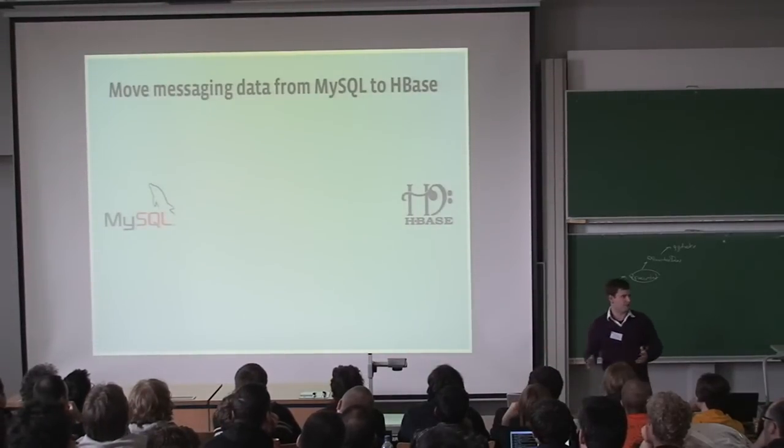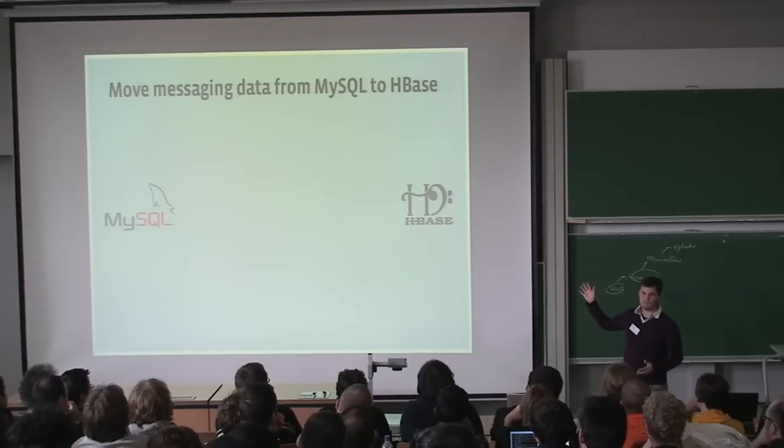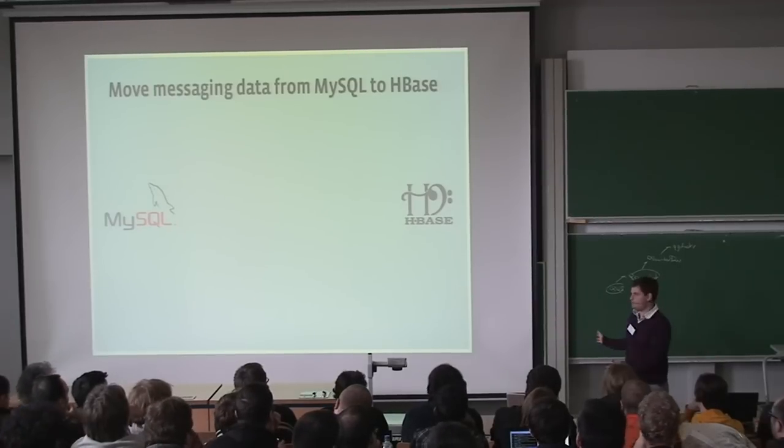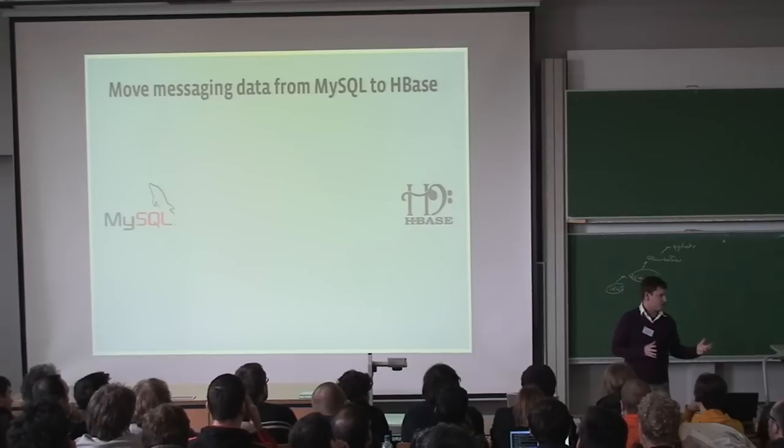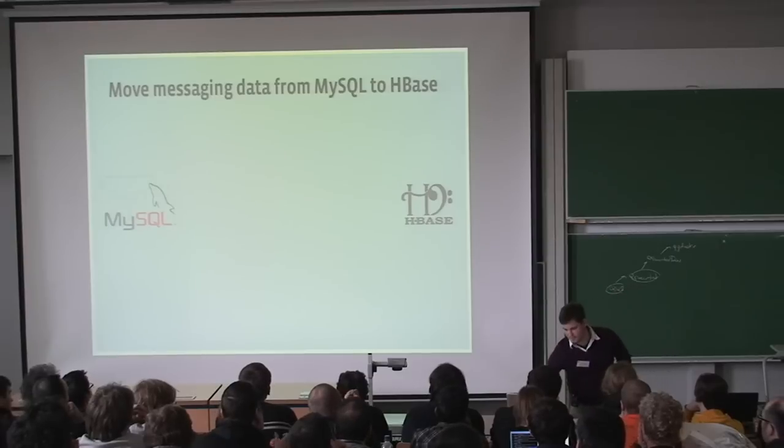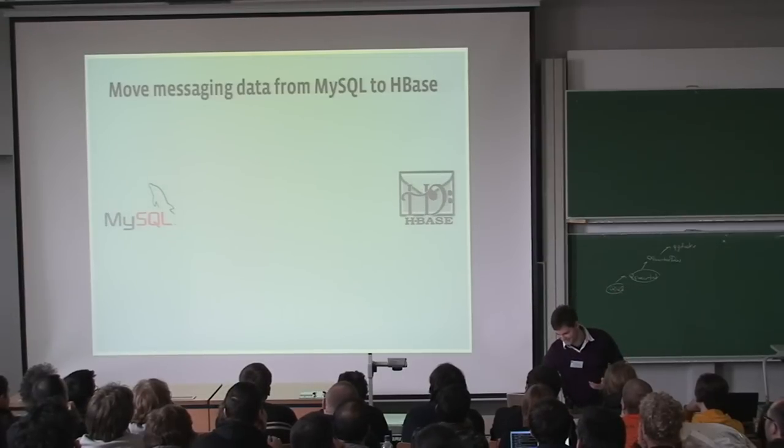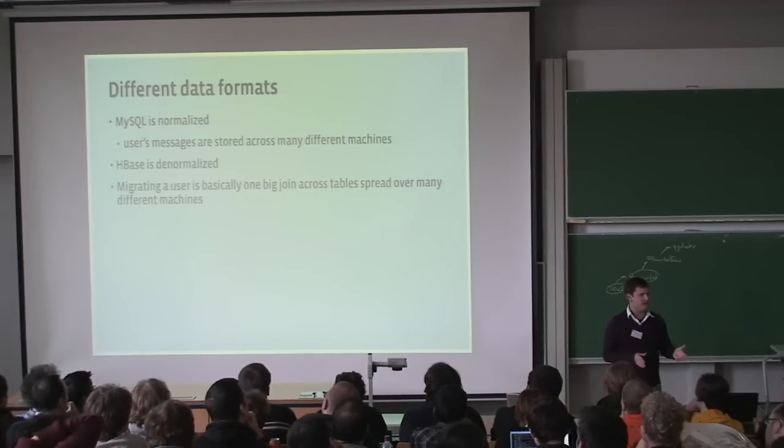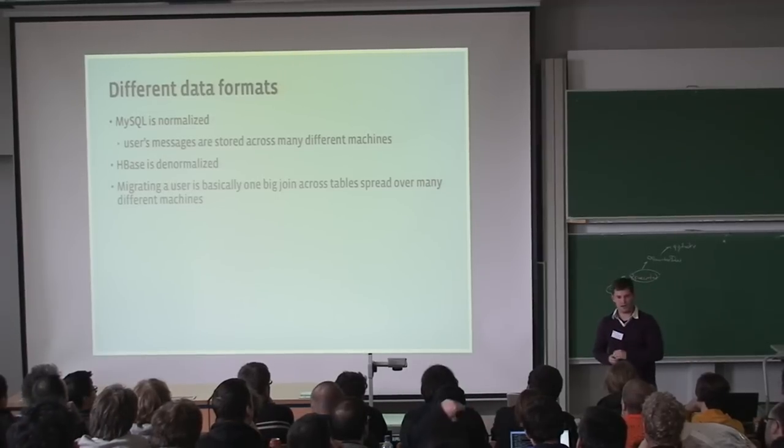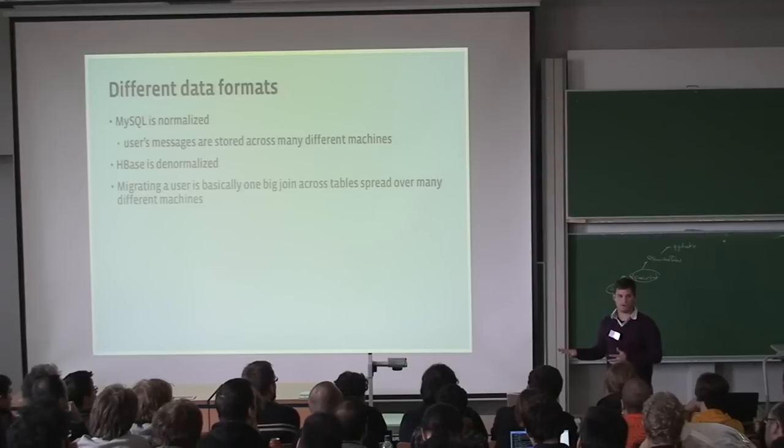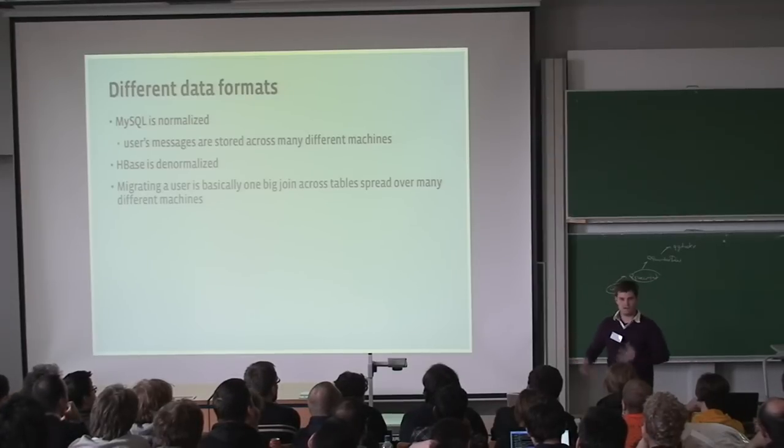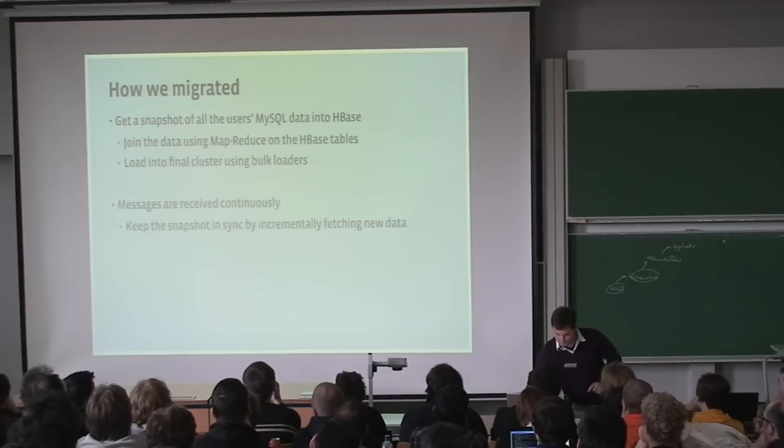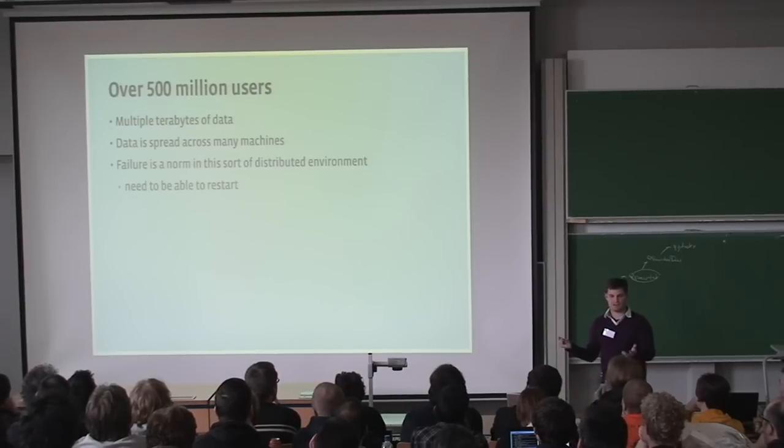So data migration. It was a big problem. Like I said, you're getting 25 terabytes of data a month coming in. We have this existing messages product. People expect their old messages to work on this new format. We're dealing with huge scale. This was all stored in MySQL in the background, and we have to go to HBase for the win. Okay. So one of the biggest problems is that MySQL is normalized. So we have three main tables that we basically had to denormalize, migrate a user over, and it's one insanely huge join of terabytes worth of data spread across many different machines. Slightly problematic. So multiple terabytes of data spread across machines. Failure is the norm.